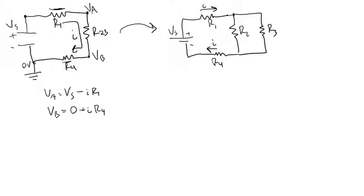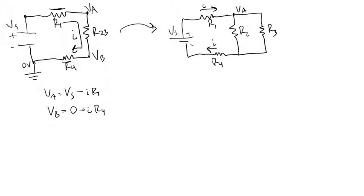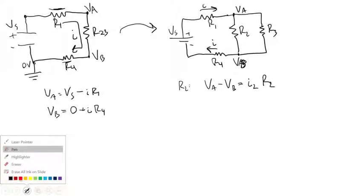So going back here, now I know VA, I know VB. So now I can apply Ohm's law to each of the resistors, R2 and R3, individually. So in this case, for R2, I have VA minus VB equals I2 R2, and I can use that to solve for my desired current I2.